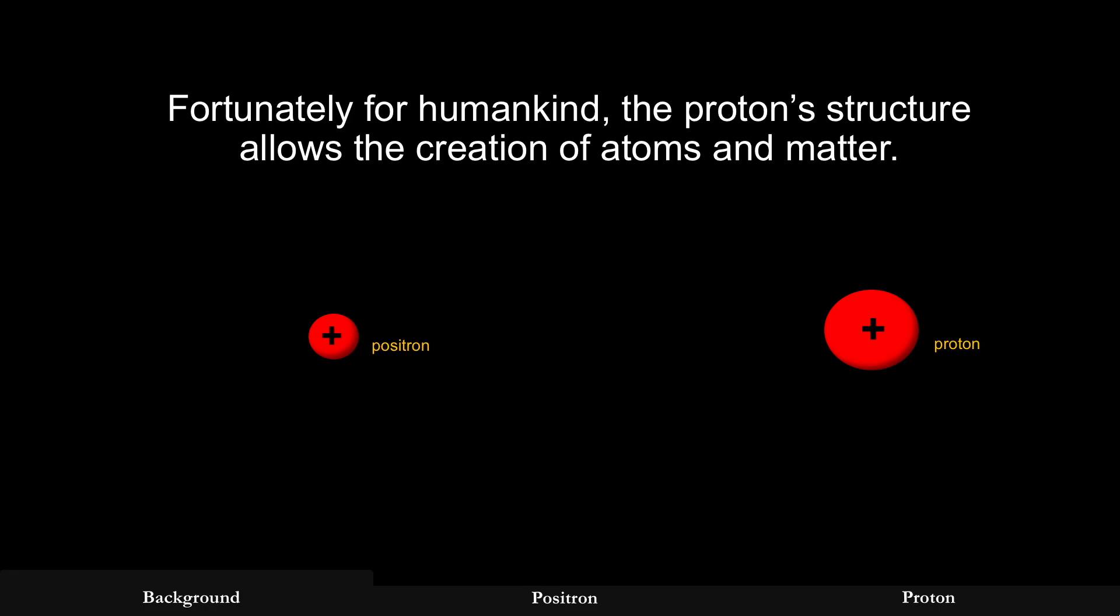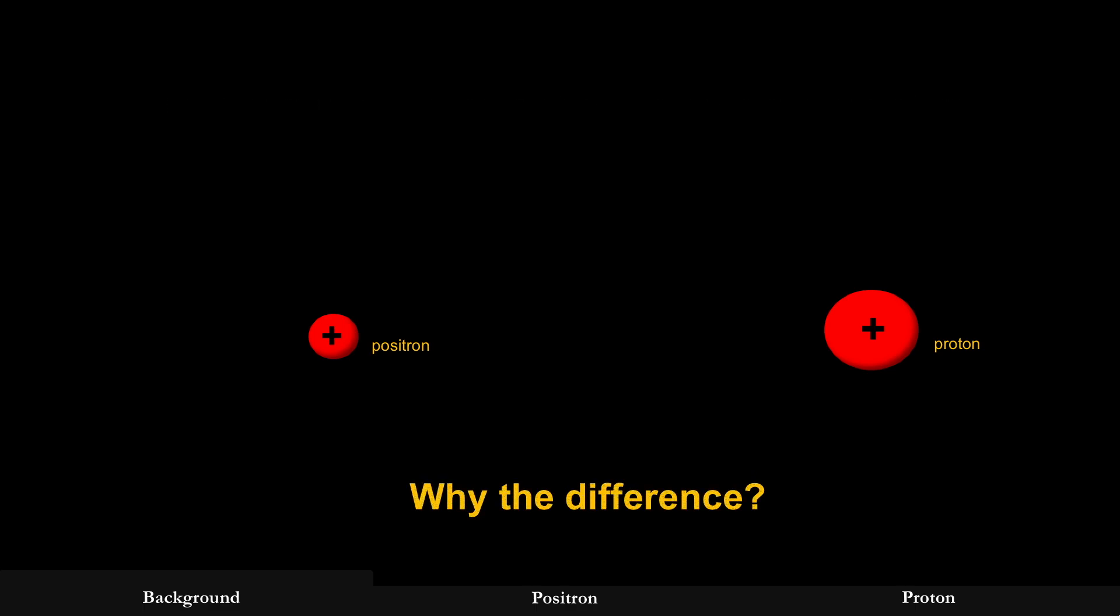But fortunately for humankind, the proton structure allows the creation of atoms and matter, as I just explained. So what is the difference then for those two positively charged particles? What makes the proton unique and allows matter and life to form?